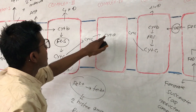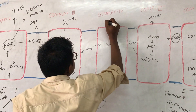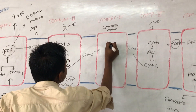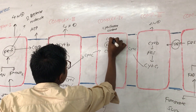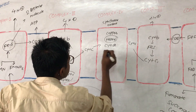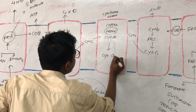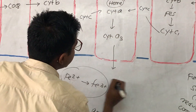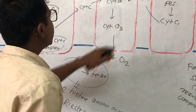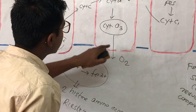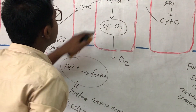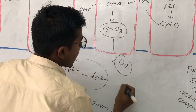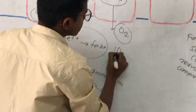Complex 4 is known as cytochrome oxidase. It is a heme-associated complex with the presence of heme and copper. Cytochrome a transfers its electron to cytochrome a3, and cytochrome a3 is the last cytochrome complex that directly transfers its electron to oxygen in the mitochondrial matrix. Therefore it is known as cytochrome oxidase, and it is associated with copper and heme.